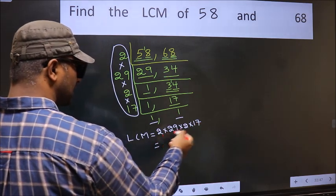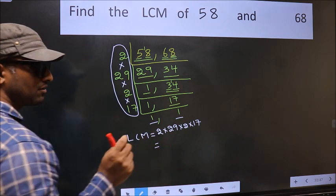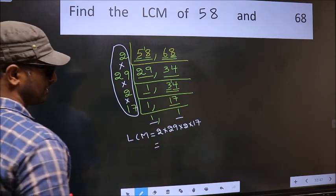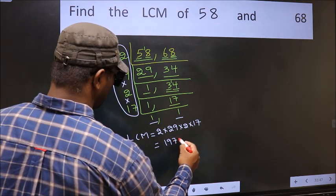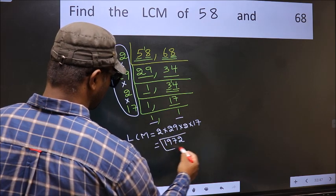When we multiply these numbers, we get 1, 9, 7, 2 is our LCM.